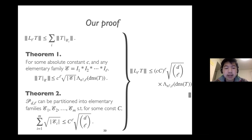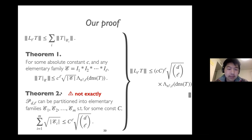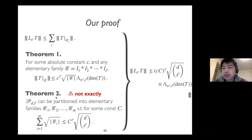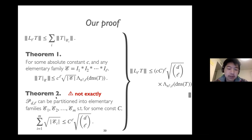One quick comment: as stated, Theorem 2 is not exactly true. To obtain the optimal bound, the elementary family must be defined slightly differently — allowing picking two variables from each interval. But the ideas discussed here capture the essential approach.